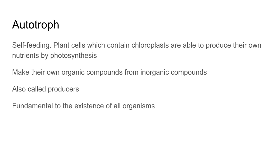An autotroph is what we refer to as self-feeding. Plant cells contain chloroplasts and they're able to produce their own nutrients by photosynthesis, making their own organic compounds from inorganic compounds. Autotrophs are also called producers, and they're fundamental to the existence of all organisms.